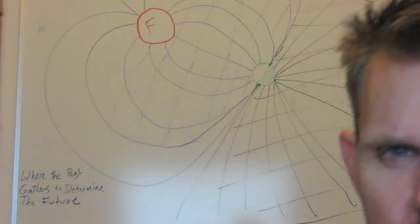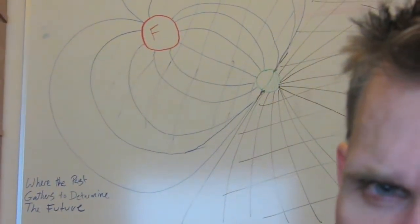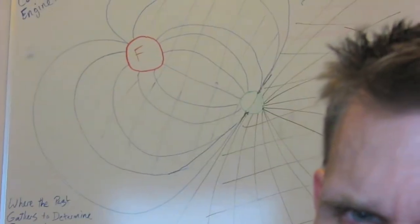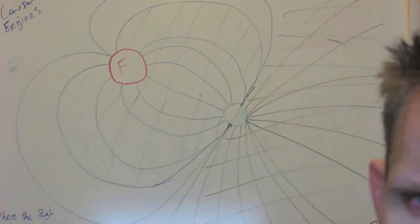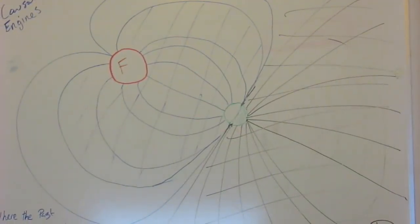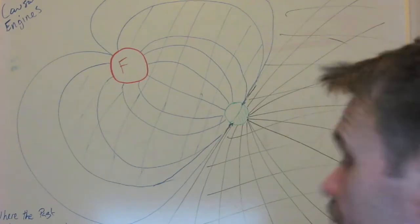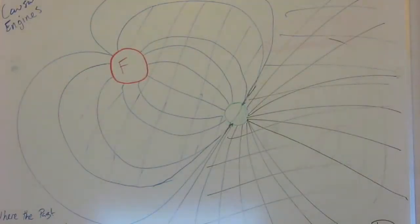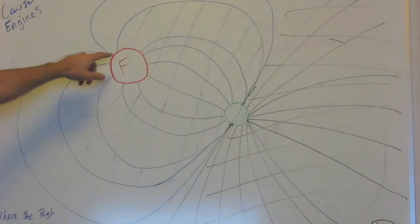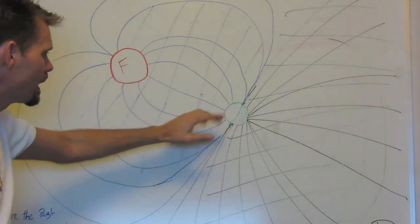In astrotometry, the concept is that the sun is the focus here, and this is the earth over here.